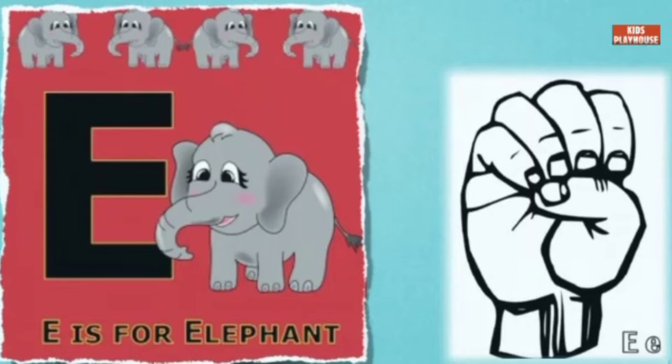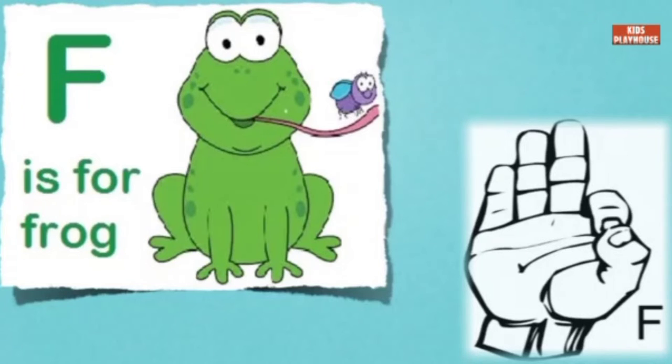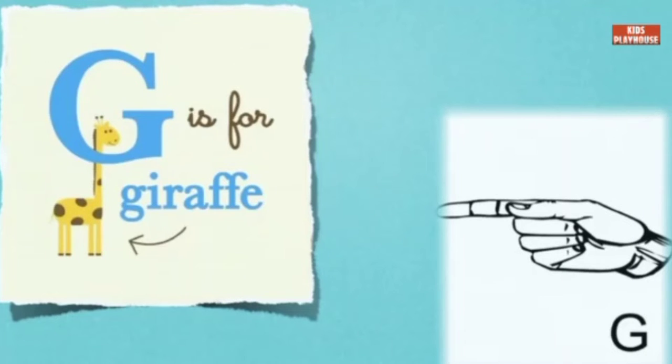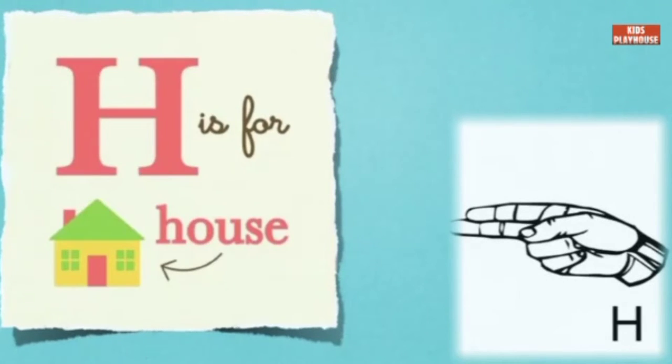E is for Elephant. F is for Frog. G is for Giraffe. H is for House.